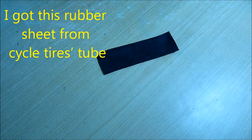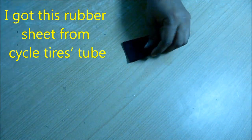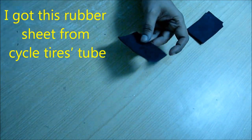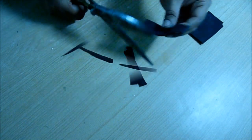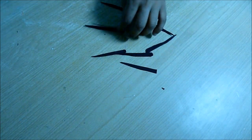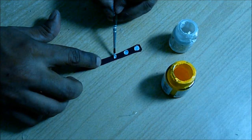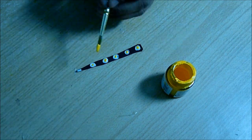Now I am going to make the legs of the octopus. For this you need this kind of rubber sheet. Cut eight pieces from it and then give a shape like this to make the legs.